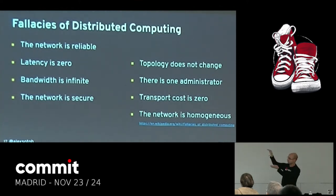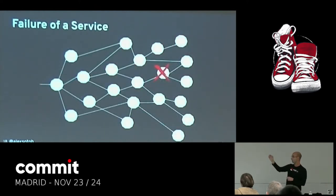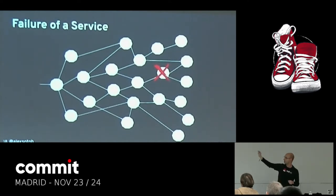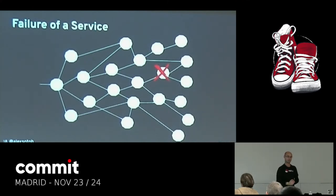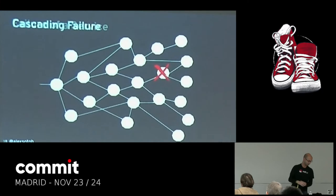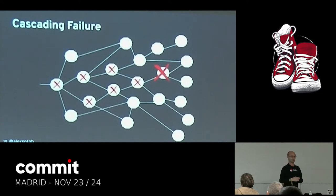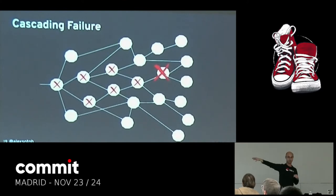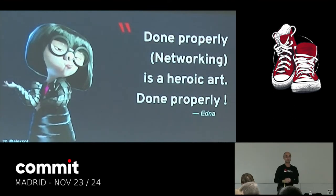If you think about just the first part — that the network is reliable — what happens if you have your microservices architecture and one of the services has a downtime just in the middle of the mesh? There will be a transitive failure across all the network, across all your architecture. It's not just a failure in one service, but also a failure in all services that depend on it. Doing networking properly is an heroic art. It's not easy at all.